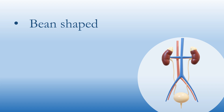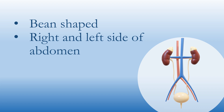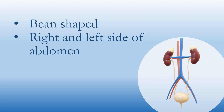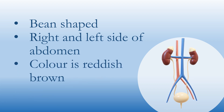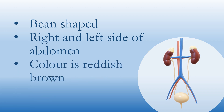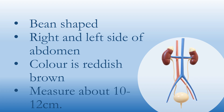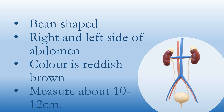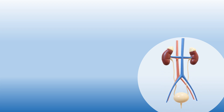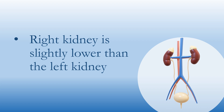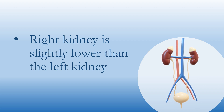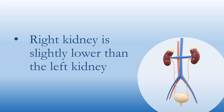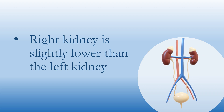Kidneys are bean-shaped structures located on the right and left side on the posterior wall of the abdomen. They are reddish-brown in color and their size is about 10 to 12 cm. The right kidney is slightly lower than the left kidney due to the larger size of the liver on the right side of the body.